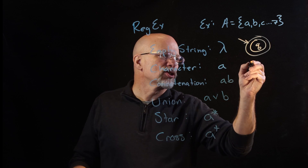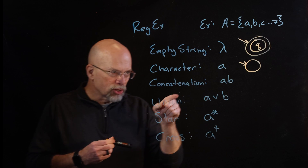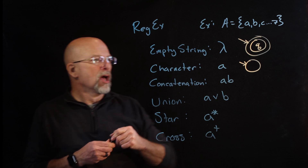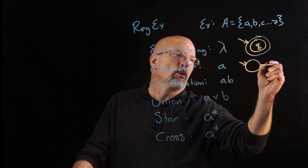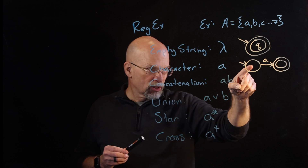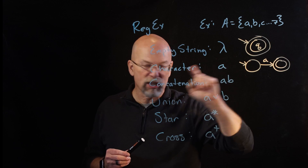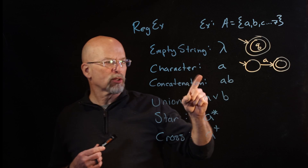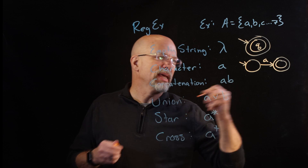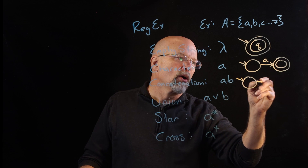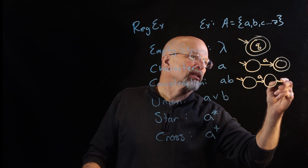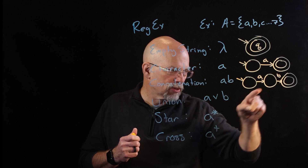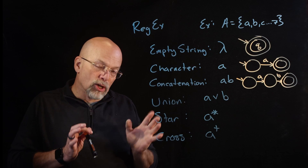For a single character, say 'a': start with an initial state, and a transition labeled 'a' takes us to the final state. For concatenation — a followed by b: start in the initial state, an 'a' transition takes us to an intermediate state, then a 'b' transition takes us to the final state. The only way from start to finish is to receive 'a' then 'b'.